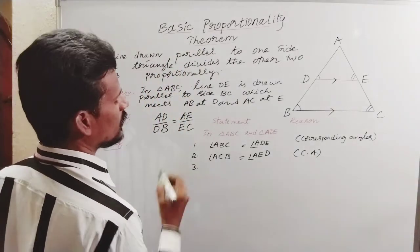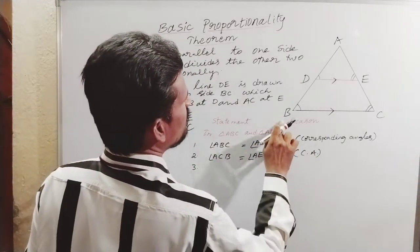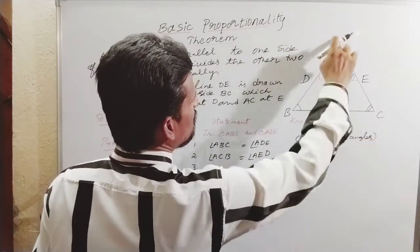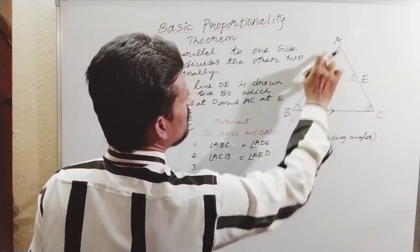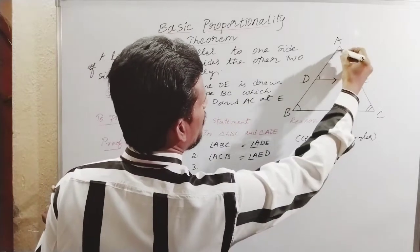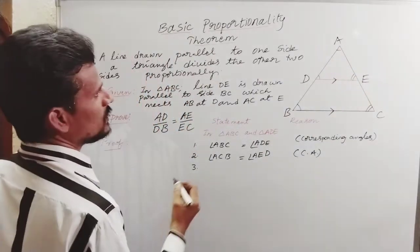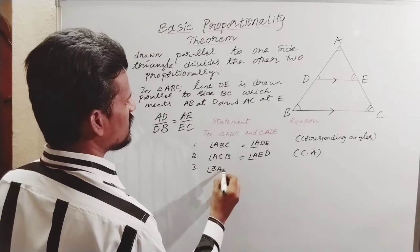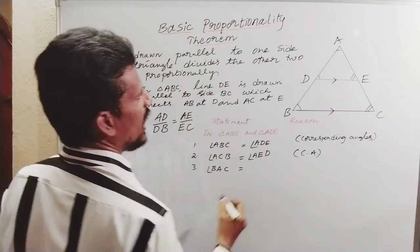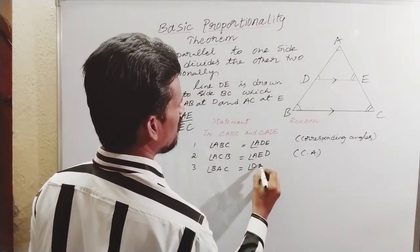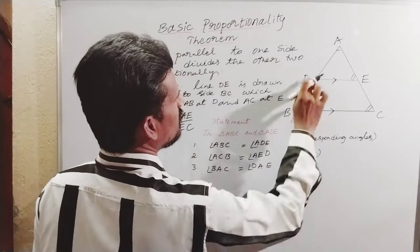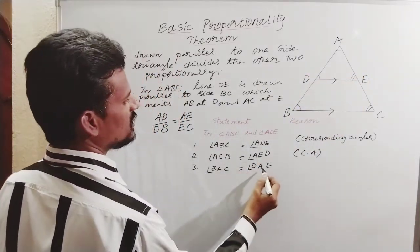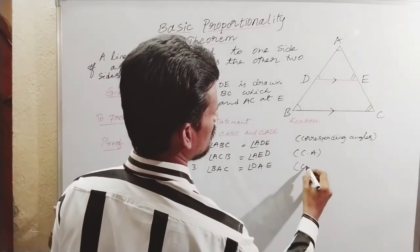Third, observe here: angle BAC and angle DAE are both common angles, so common angles are equal. Statement: angle BAC is equal to angle DAE. Reason: common angles.